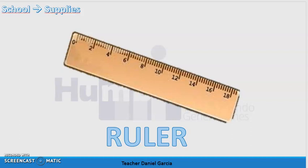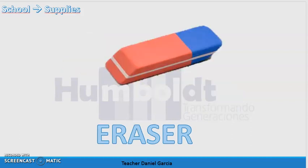The spelling of notebook is n-o-t-e-b-o-o-k. We continue with ruler — la regla. The spelling of this word is r-u-l-e-r, ruler. We continue with eraser — borrador. In British English it is rubber. The spelling of this word is e-r-a-s-e-r, eraser.